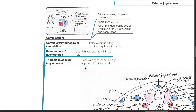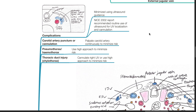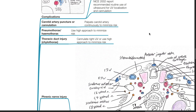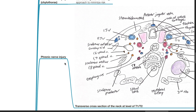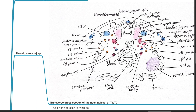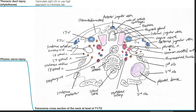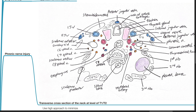To minimize the risk of thoracic duct injury, cannulate the right IJV instead of the left, or use a high approach. All complications can be minimized using ultrasound guidance. Phrenic nerve injury — the phrenic nerve is located posterior to the internal jugular vein and lateral to the common carotid artery, anterior to the scalenus anterior.